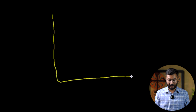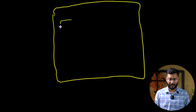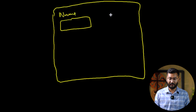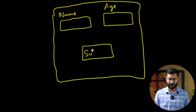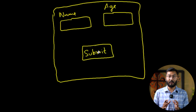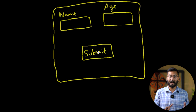Now let's create the blueprint of the UI we need to deploy into our Salesforce org. The component will have a first field with the label 'Name', another field with the label 'Age', and a button labeled 'Submit'.